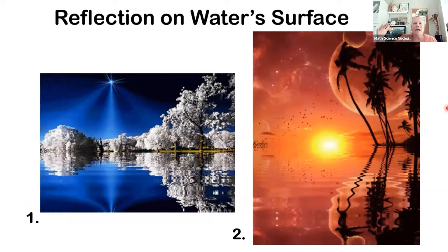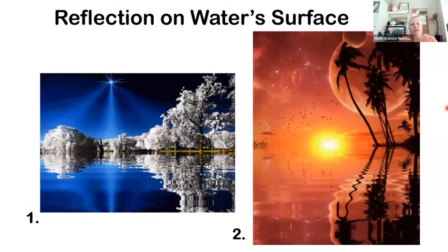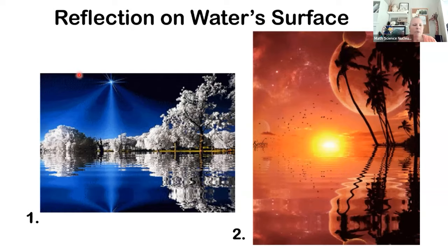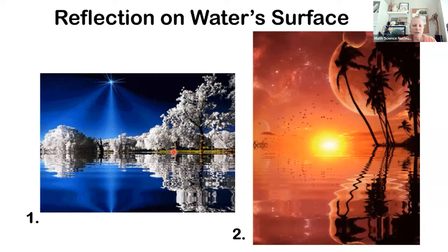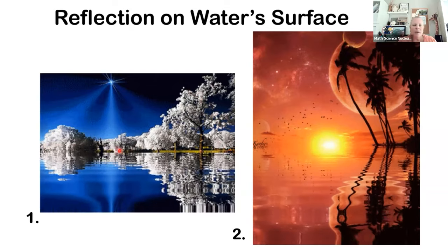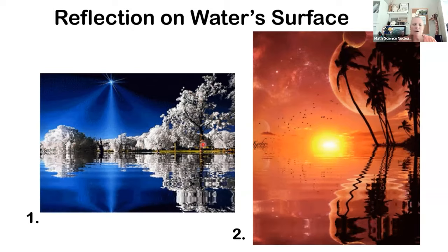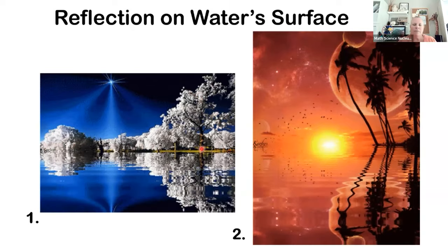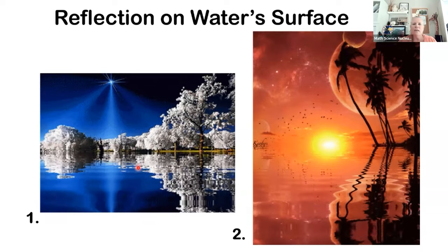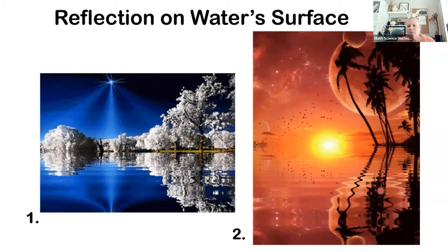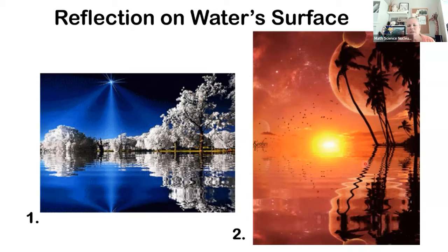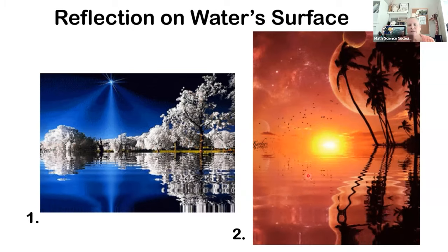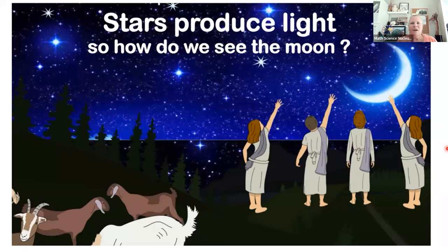Look at these two pictures — can you tell where the land stops and the water reflection begins? In number one we've got our sky with trees, here's the coastline, and all of this below is water. You can see how even the trunk of the tree is reflected in the water. Same thing over here with palm trees reflected in the water, and even birds flying are reflected — the image is bouncing off.